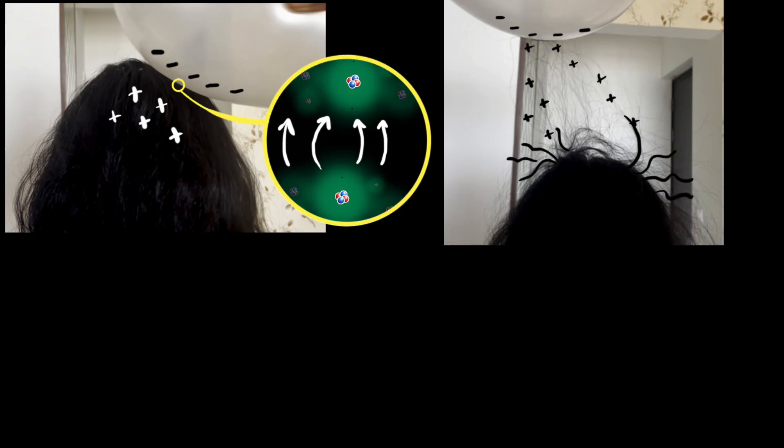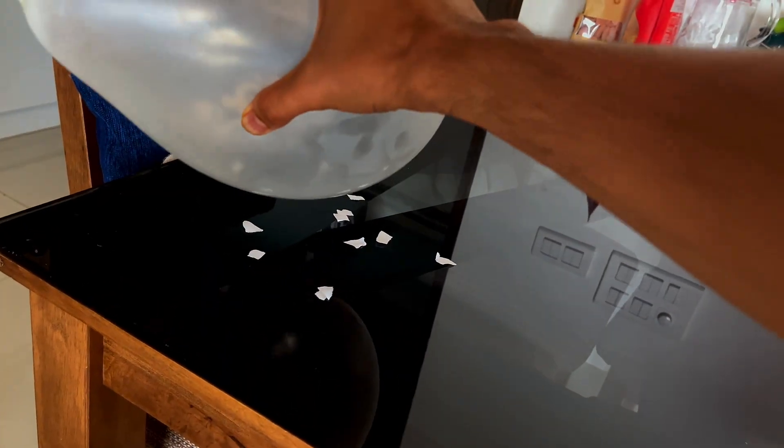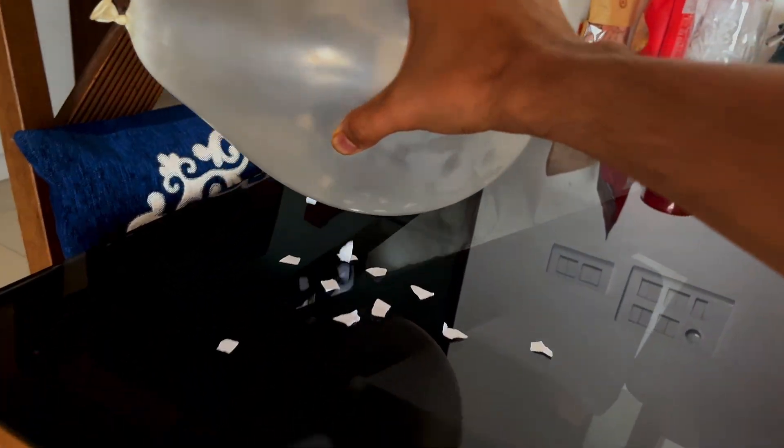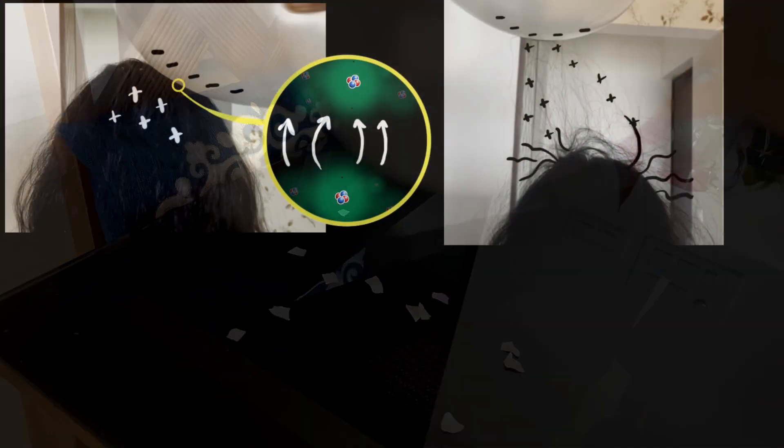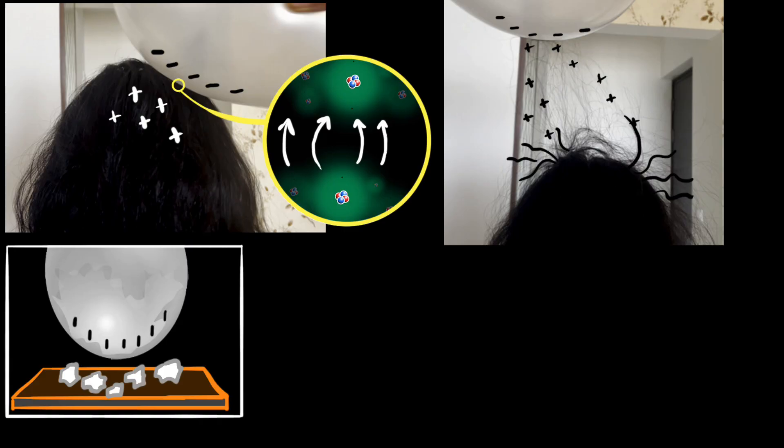But now comes a curious question. Why did the balloon attract those tiny pieces of paper? Yes, the balloon was negatively charged, but the pieces of paper were not charged. I didn't charge them at all. Then why did they get attracted? Let's see if we can model them. So here's the situation, we have the negatively charged balloon, we have this uncharged pieces of paper, meaning neutral paper. Why would it attract it?